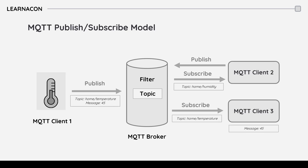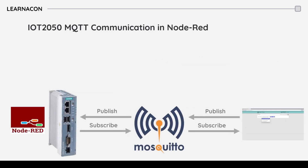Now you have an idea of how MQTT communication works. Keep in mind that for every message, we have three elements in the communication loop: a publisher, a broker, and a subscriber, which are linked together through a topic. Each node in this loop can publish or subscribe to data — in other words, send or receive information.